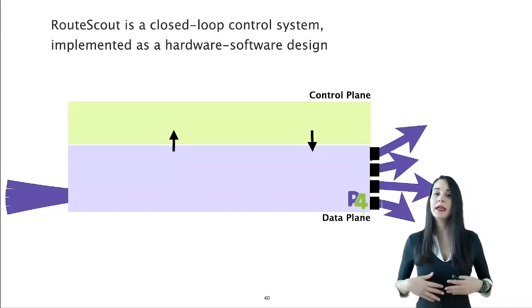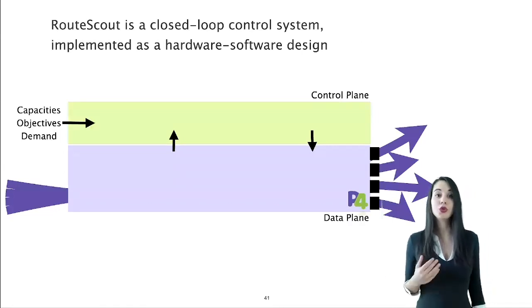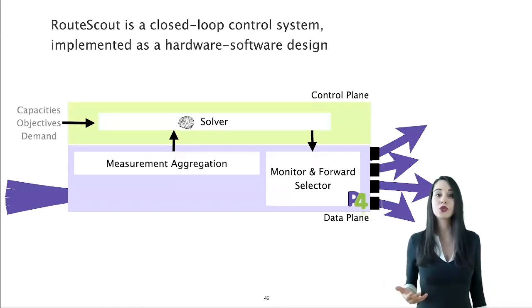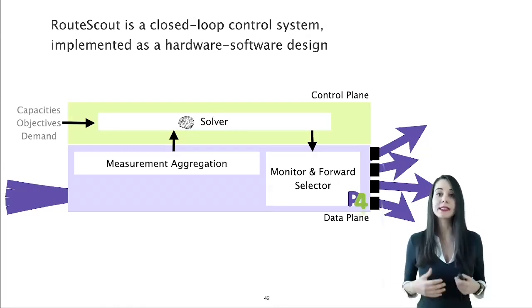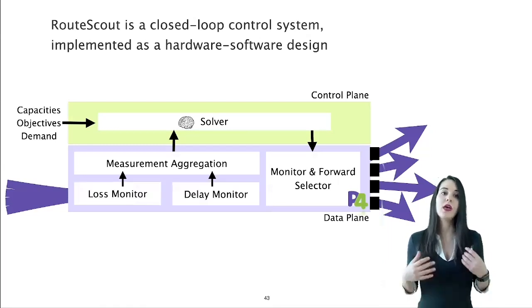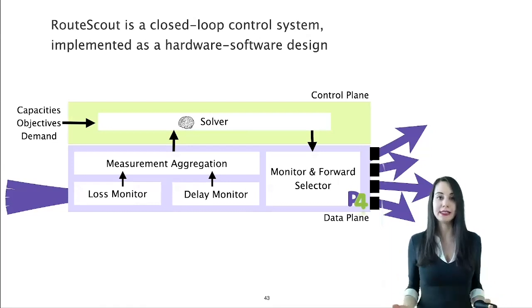RouteScout is a closed-loop control system implemented as a hardware-software co-design. To use RouteScout, the operator first specifies the prefixes of interest together with their typical traffic demands and the bandwidth of the direct links. Finally, the operator specifies her objectives, which can be conflicting. The software part, namely the control plane, first decides which traffic to monitor and then it periodically pulls data plane measurements. Every time the control plane pulls the aggregated measurements, it also computes the forwarding plan, namely, it decides which traffic to reroute to its next hop. To do so, the control plane formulates and solves a linear optimization problem. The hardware part, namely the data plane, collects and aggregates loss and delay measurements for the control plane to pull and analyze. Finally, the data plane receives and enforces the forwarding decisions of the control plane.